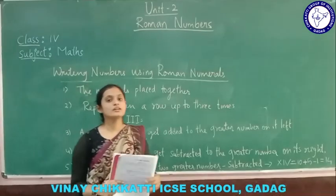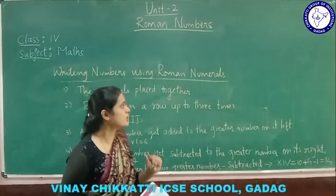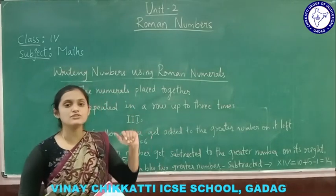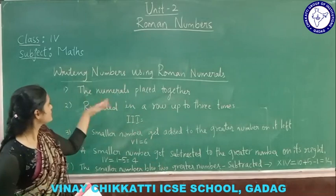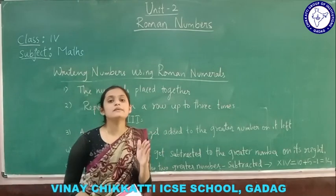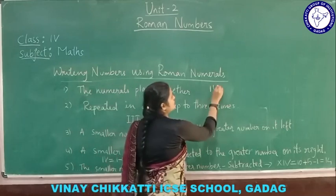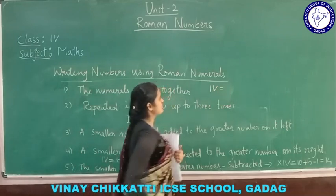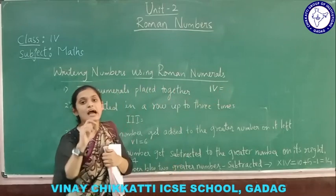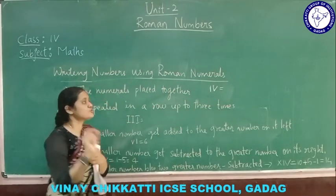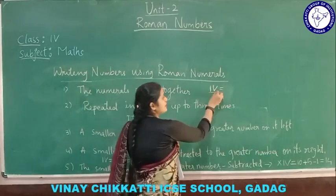Roman numbers are a combination of alphabets. While writing Roman numbers, we should follow some rules and guidelines. These Roman numbers are placed together in a single row and can be added or subtracted.